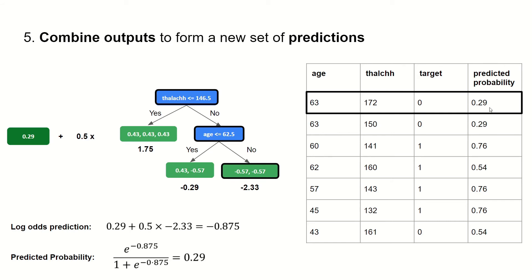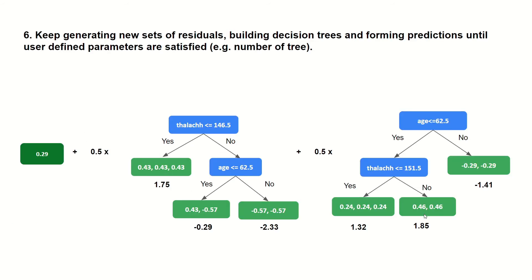We apply the exact same thing for each of our entries. We can then use those predicted probabilities to generate a new set of residuals, then build a decision tree on those residuals, and then form another new set of predictions. Essentially, new decision trees keep being built, and we add on from the mistakes of the previous decision trees. We keep generating these decision trees until user-defined parameters are satisfied.